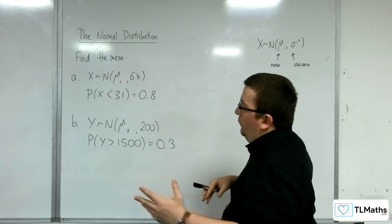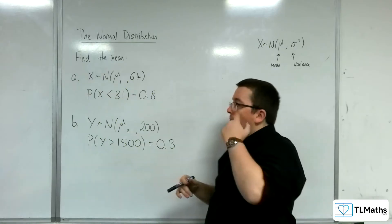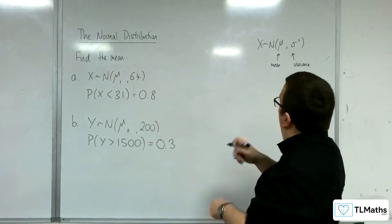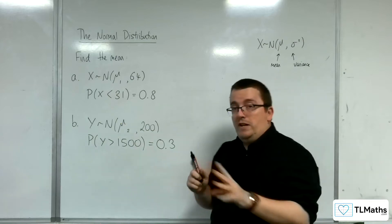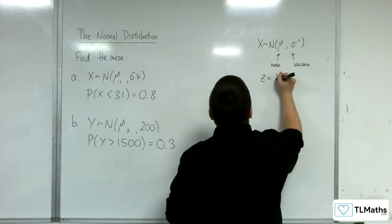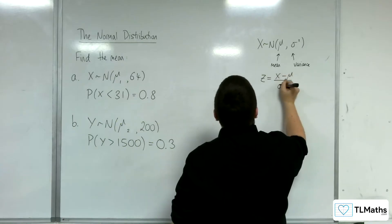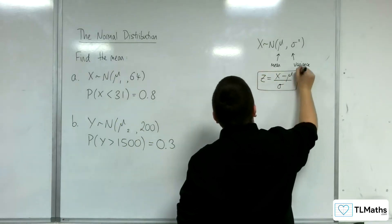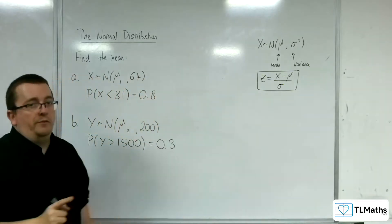Now, we're going to use the tables in this video, so the first thing that we need to recall is that formula. So z equals x minus μ over σ, we need to keep coming back and reminding ourselves of that formula.